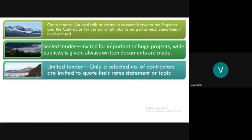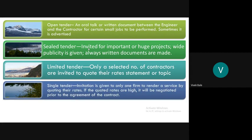The fourth type is single tender. Such a tender is issued where an item is of proprietary nature or where the materials are supplied by a single supplier. Single tender is an invitation given to only one firm to render a service by quoting their rates. If the quoted rates are high, they will be negotiated prior to the agreement of the contract.